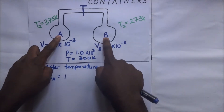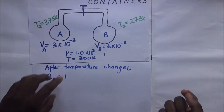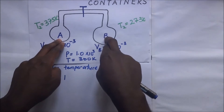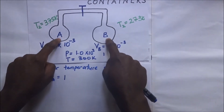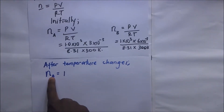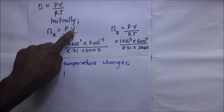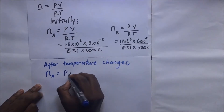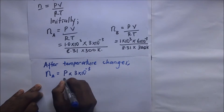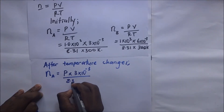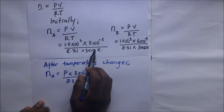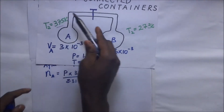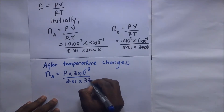The total pressure in A and B will change because pressure and temperature are related. However, the number of molecules remains the same. After the temperature change, the moles in container A are: n_A(new) = (P × 3×10⁻³) / (8.31 × 375), where the new temperature of A is 375 kelvin and P is the unknown new pressure.